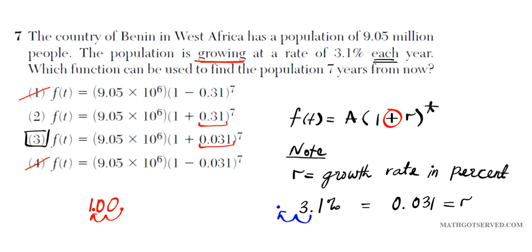For problem number seven, this is a population growth problem. You just have to remember the formula for growth and decay. For population growth, you have an initial amount times one plus the growth rate, raised to the t power. If you have a decay situation, it would be minus instead. The percentage has to be expressed in decimal form — you convert percents to decimals by moving the decimal point two places. Input that into your formula for discrete growth, and that gives you option number three.